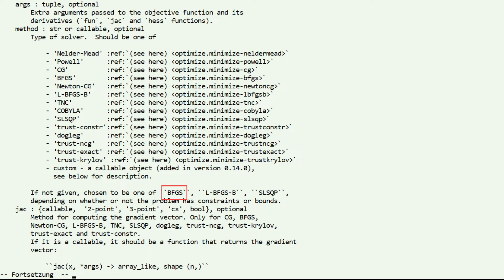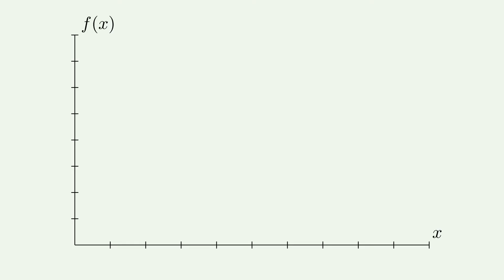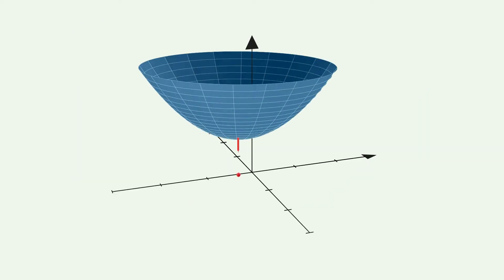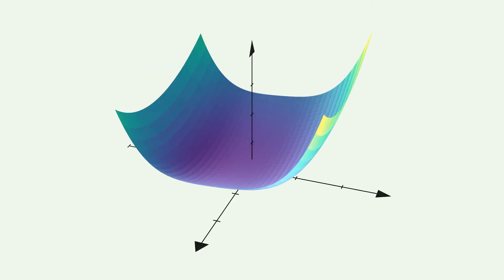But before we come to the BFGS algorithm, let us first take a look at one of the simplest functions to minimize, and this is a quadratic function. If the function is quadratic, it is very easy to find the minimum analytically, and even in higher dimensions, finding the minimum of a quadratic function is very easy. Knowing that we can minimize a quadratic function gives us an algorithm to minimize a non-quadratic function. This is known as Newton's algorithm.